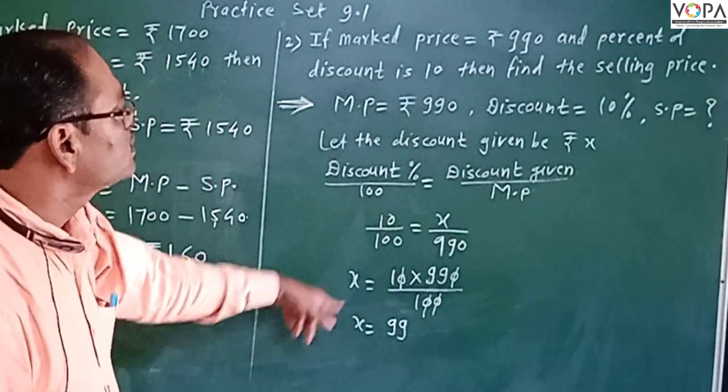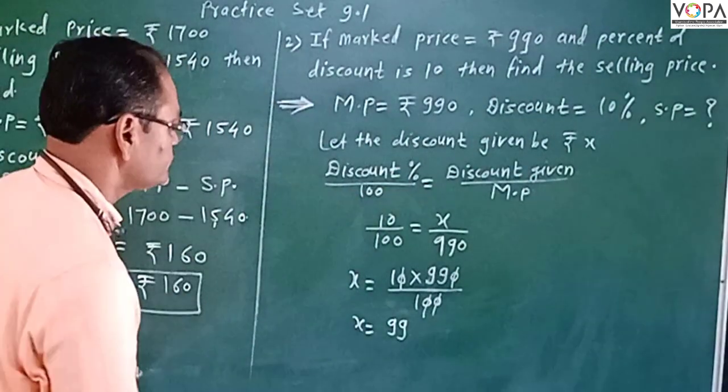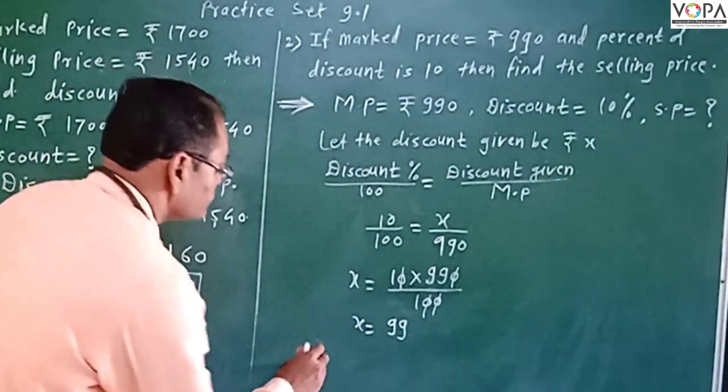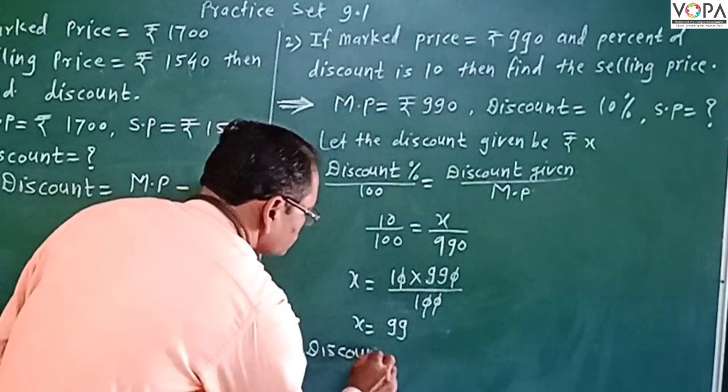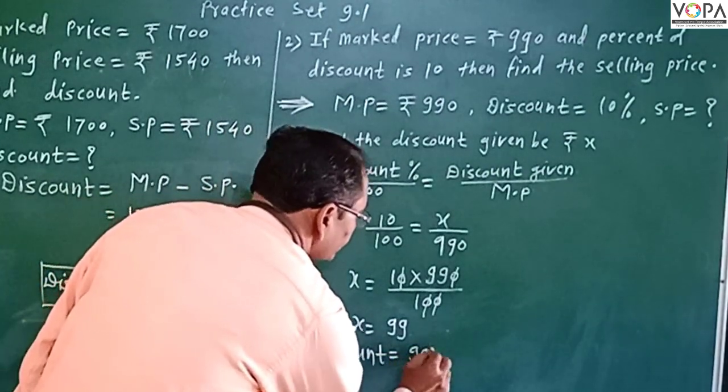X means discount. So X equals 10 into ₹990 upon 100.